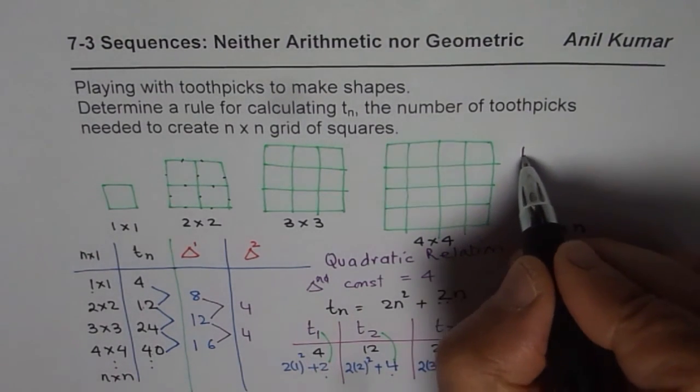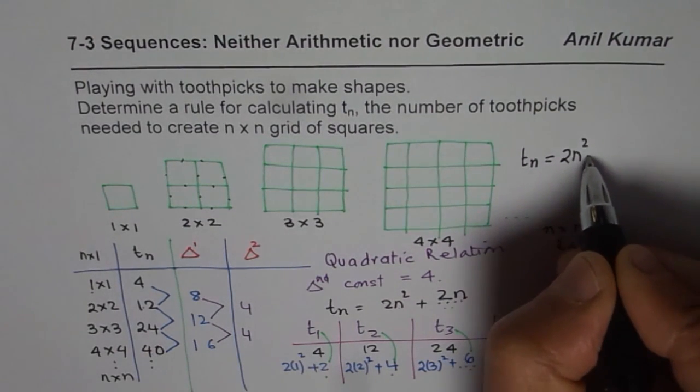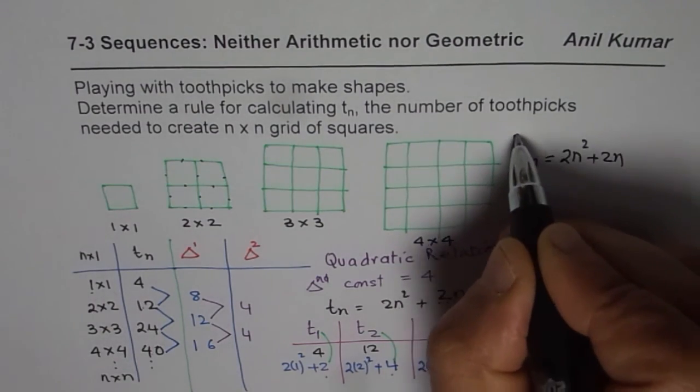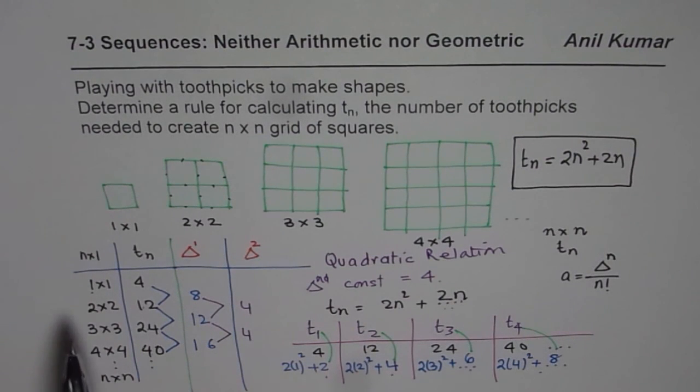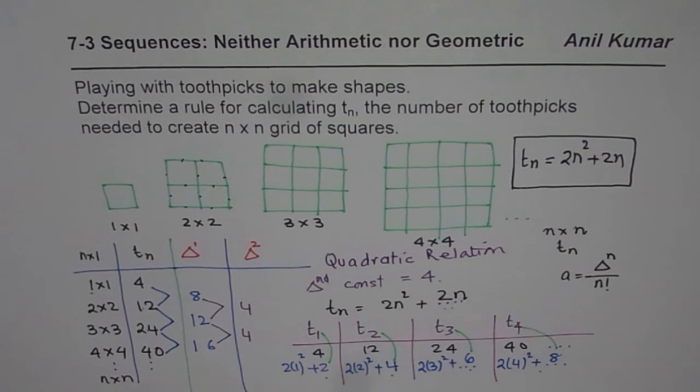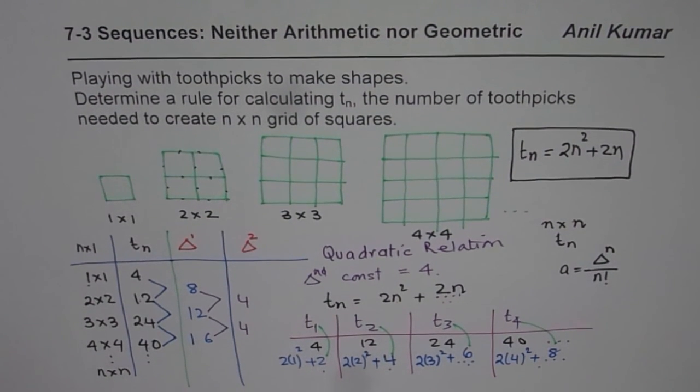In the n by n matrix, the number of toothpicks required will be 2n square plus 2n. That is how you can get a formula for such a question. You need to make a table of values, find differences, and from the differences you get clues to get to the rule. If you follow some pattern in figuring out those rules, you can get to a general equation. I am Anil Kumar. You can subscribe to my videos and learn a lot. Thank you and all the best.